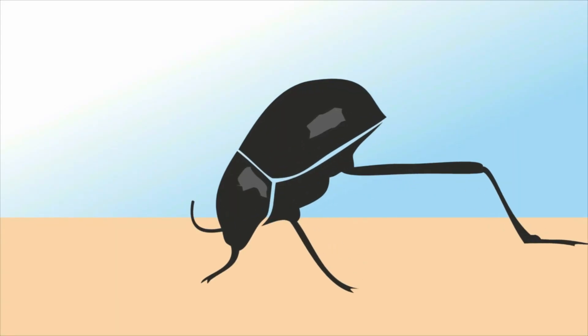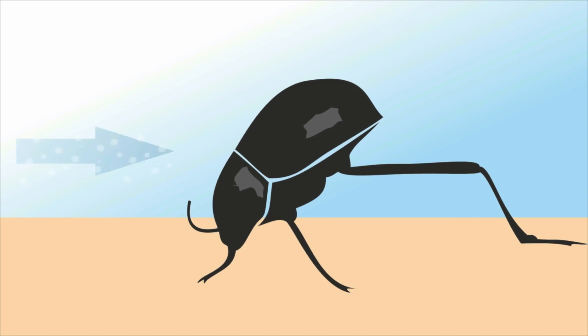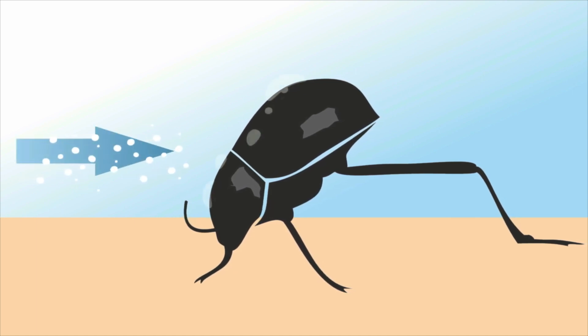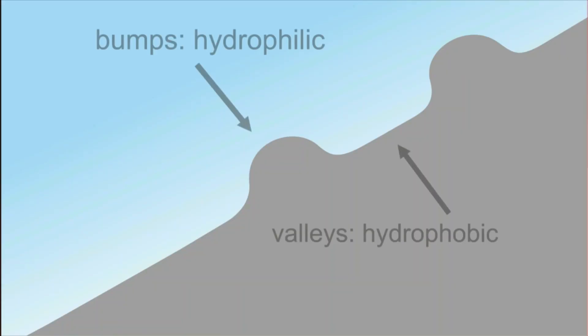An interesting example for this is the Stenicera gracilipis. In order to collect vital water from the wafts of mist, it has developed a special trick. With the particular form and wetting contrast of the wings, drops are collected on the back, which then flow to the head.